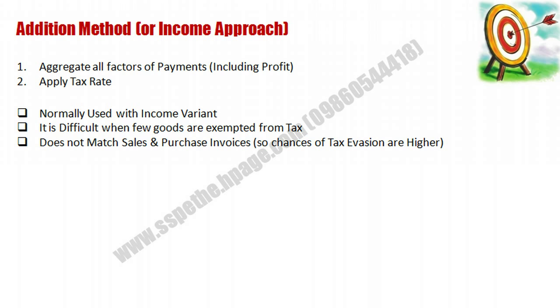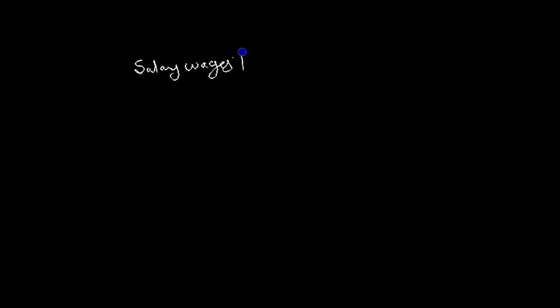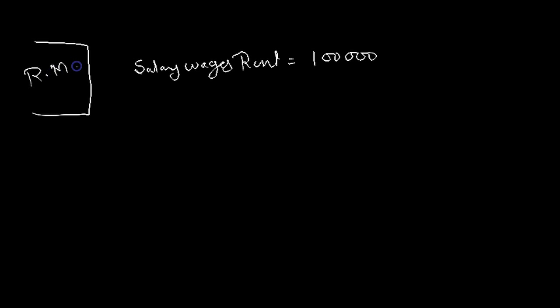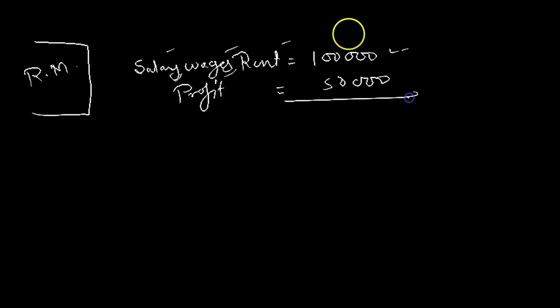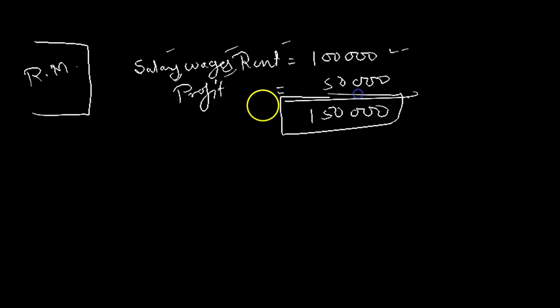Let's see this with an example. Suppose the factors of production — salary, wages, rent — total 1 lakh rupees. We are not considering raw material here; we are only considering the value addition. Add the profit margin — suppose during the month salary, wages, rent total 1 lakh and the profit margin is 50,000 — so the total value addition is 1 lakh 50,000. Then apply the tax rate, let's assume 10%.